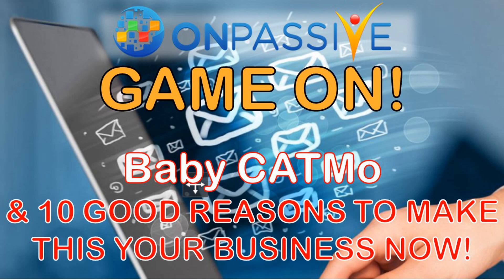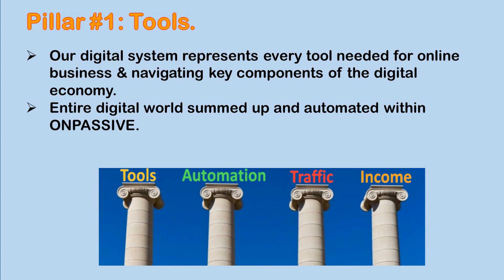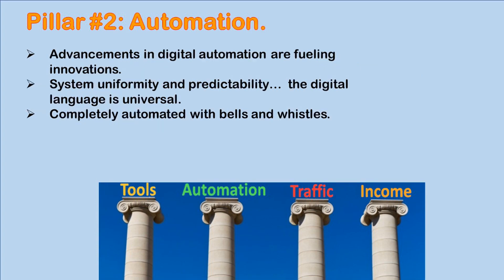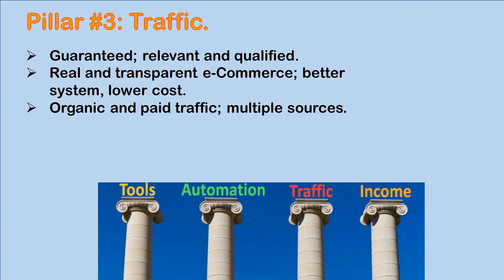When we talk about CATMO — C-A-T-M-O — we're actually condensing the references to the four pillars of OnPassive, which are Tools, Automation, Traffic, and Income. Pillar number one, Tools, is our digital system and it represents everything needed for an online business and for navigating the key components of the digital economy. The entire world is summed up and automated within OnPassive. Pillar number two is Automation — advancements in digital automation are fueling the digital innovations we're seeing, and OnPassive is on the fringe of every bit of that. We have systems that offer uniformity and predictability, and the digital language is universal.